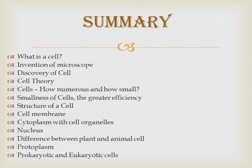We also discussed the cell theory. The three scientists who postulated it were Matthias Schleiden, Theodore Schwann, and Rudolf Virchow, who gave the third postulate — that all cells arise from pre-existing cells. The three postulates are: the cell is the smallest unit of structure of all living things; the cell is the unit of function of all living things; and all cells arise from pre-existing cells.